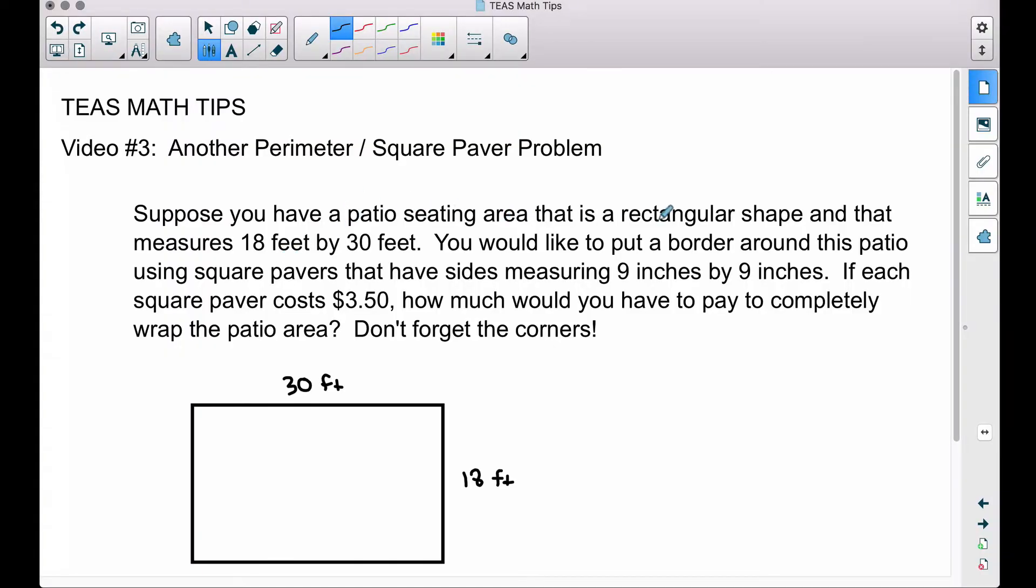We have a patio seating area that is a rectangular shape and it measures 18 feet by 30 feet. So here's that rectangular patio. We would like to put a border around this patio using square pavers. You can buy these at Lowe's or Home Depot, and these square pavers have sides of nine inches by nine inches. Notice here, we got feet and we got inches. If each square paver costs three dollars and fifty cents, how much would you have to pay to completely wrap the patio area? Don't forget the corners.